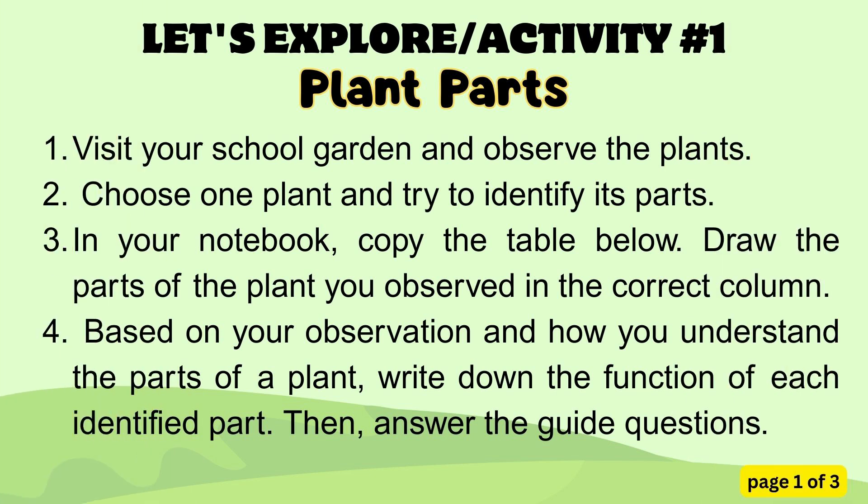Activity number one: visit your school garden and observe the plants. Choose one plant and try to identify its parts. In your notebook, copy the table below. Draw the parts of the plant you observed in the correct column. Based on your observation and how you understand the parts of a plant, write down the function of each identified part. Then, answer the guide questions.